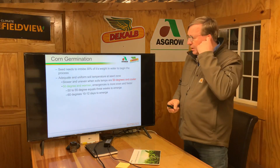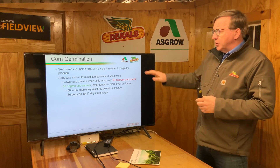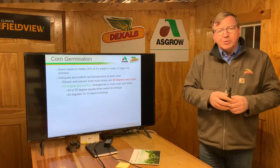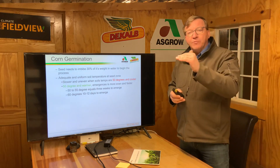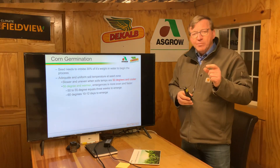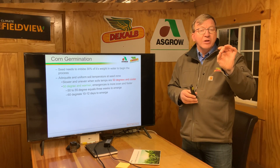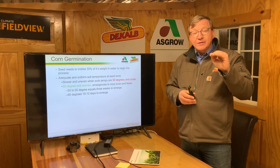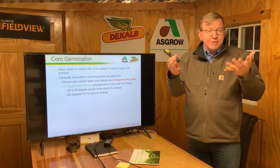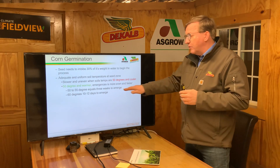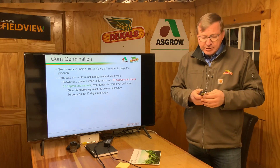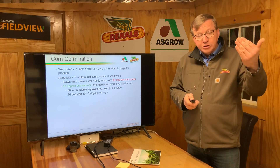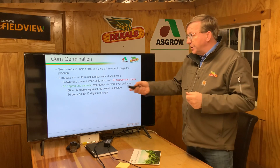So what affects germination? The plant needs to imbibe about 30% of its weight in moisture before it can actually germinate. What we're really looking for is an even uniform stand. The more even and uniform the temperature is at the seed, and the more even and uniform the soil is packed around it, that temperature at the seed is going to give us the best, most uniform emergence. If we're dealing with 50 to 55 degree temperatures at the seed, it's going to take about three weeks to get that plant emerged. If we're dealing with warmer conditions — 60 degrees or above — we can do that in 10 or 12 days.